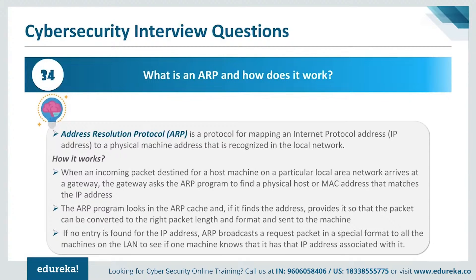If no entry is found for the IP address, ARP broadcasts a request packet in a special format to all machines on the LAN to see if one machine knows that it has the IP address associated with it.